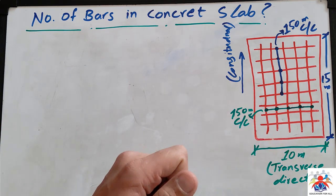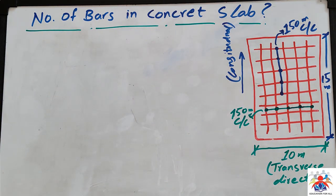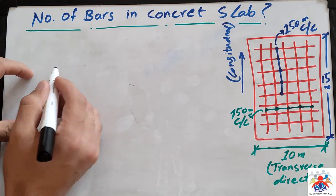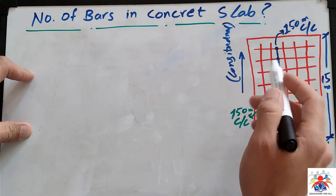Transverse direction and longitudinal direction. Here I can explain how we can calculate these number of bars. First of all we will calculate our longitudinal direction as you can see in the blue color.